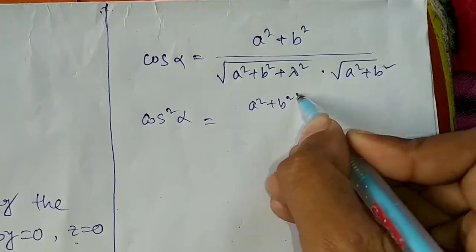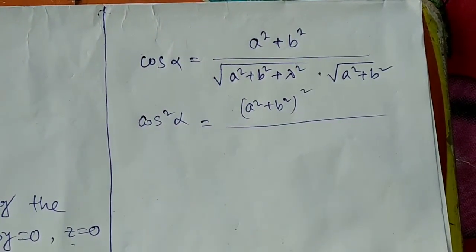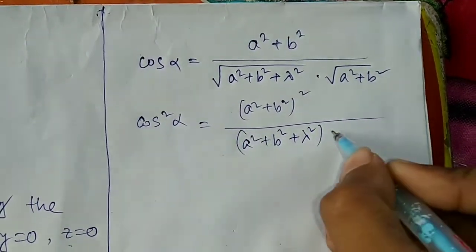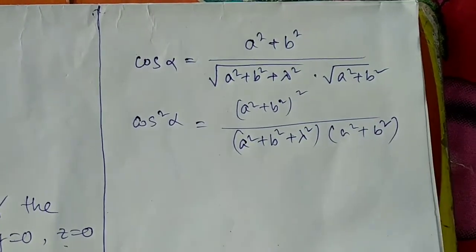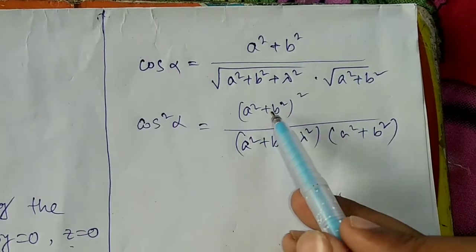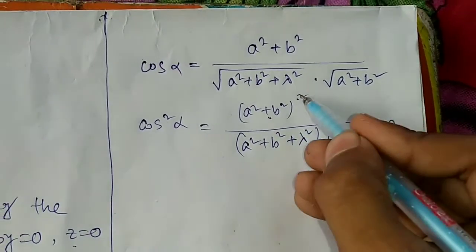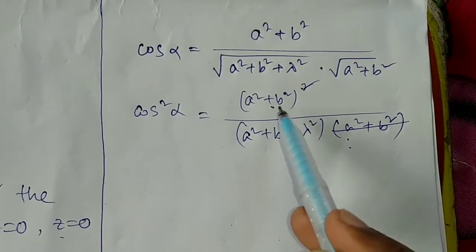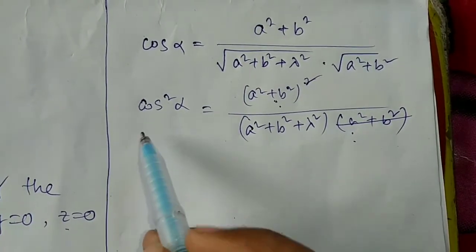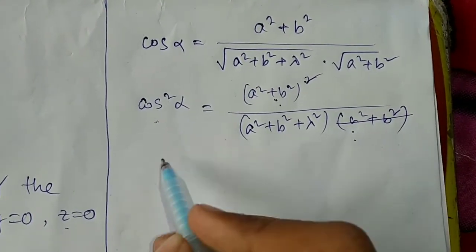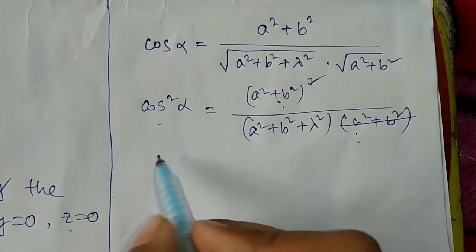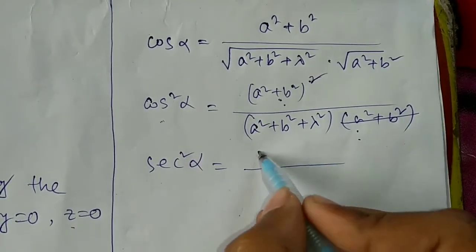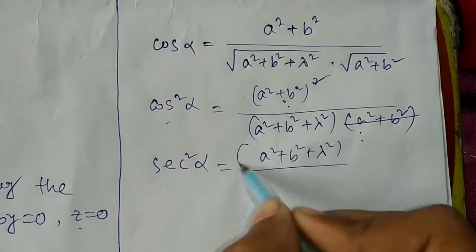After squaring, we get: cos squared alpha equals to (a squared plus b squared) divided by (a squared plus b squared plus lambda squared). One factor of (a squared plus b squared) cancels from the numerator and denominator, leaving a single power in the numerator. Now we need to convert cos squared alpha to tan alpha form.